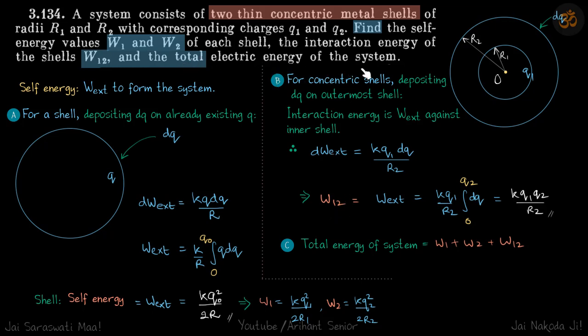Finally, the total electrical energy of the system. So that is self-energy of first shell plus self-energy of second shell plus interaction energy of both the two shells. W1 plus W2 plus W12. So I am not doing it here, you can just do it yourself and verify the answer. All right.